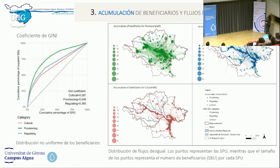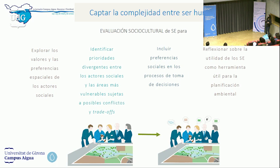Esa fue una pregunta muy difícil. Por último, la acumulación de beneficiarios nos permitió ver si estos servicios eran distribuidos uniformemente, y vimos que no: había una distribución muy desigual. Identificamos puntos en la cuenca hidrográfica de gran concentración de beneficiarios y de gran depresión, es decir, puntos que tendrían que tener una prioridad de gestión ya que conllevan muchísimos usos de agua que muchas veces son conflictivos. Esta metodología participativa nos permitió explorar los valores y preferencias de los actores sociales, encontrar trade-offs, prioridades y conflictos latentes, y reflexionar sobre la utilidad de esta herramienta para encontrar medidas de gestión del agua más eficaces y sobre todo más inclusivas. Gracias.